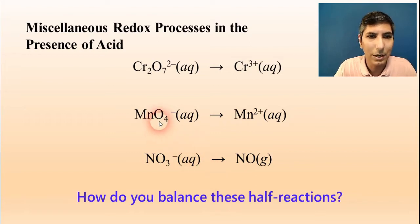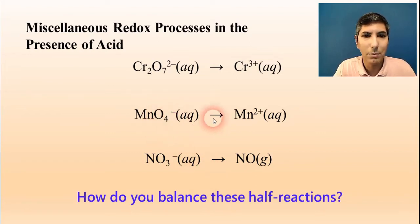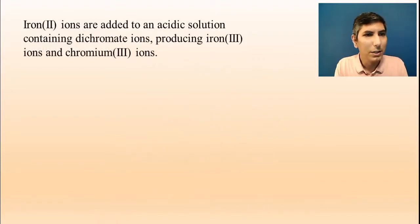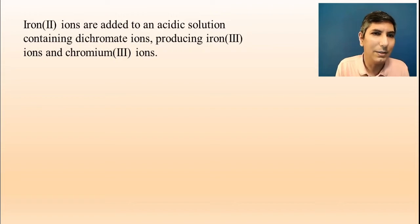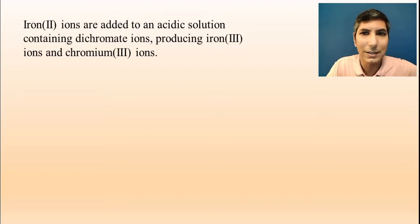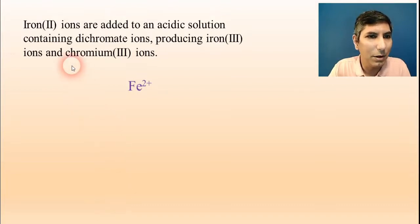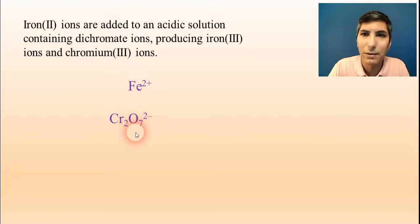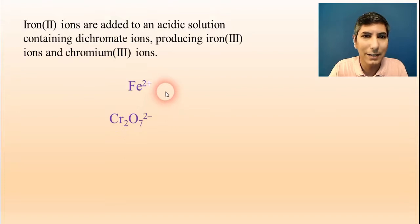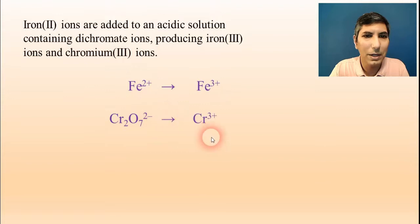How do you balance, for example, a half reaction where there are four oxygens on one side but there aren't any oxygens on the other side? There's a very special way to do that. In this one, we have iron 2+ ions added to an acidic solution containing dichromate ions, producing iron 3+ ions and chromium 3+ ions. So we're going to start with iron 2+ and write the formula for dichromate ions. It tells us what the products are: iron 3+ and chromium 3+ ions.